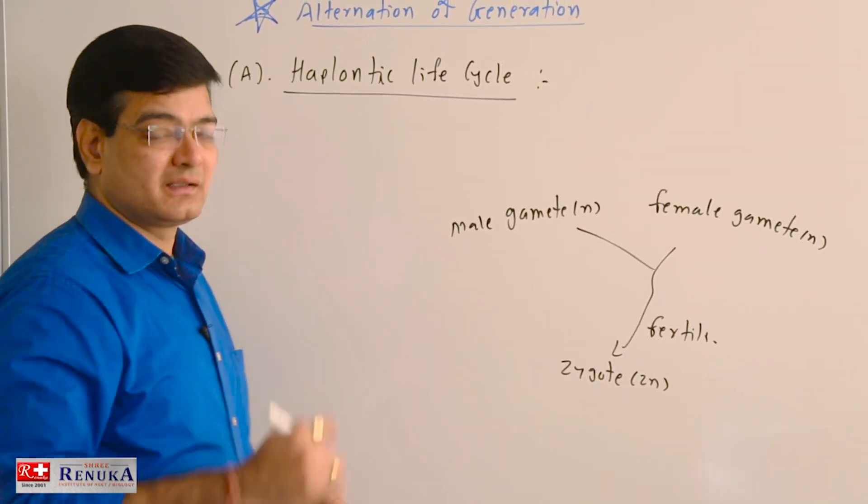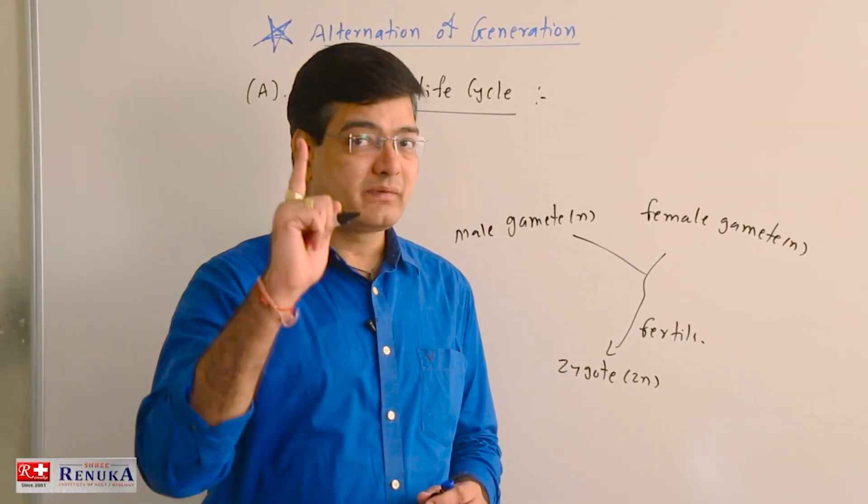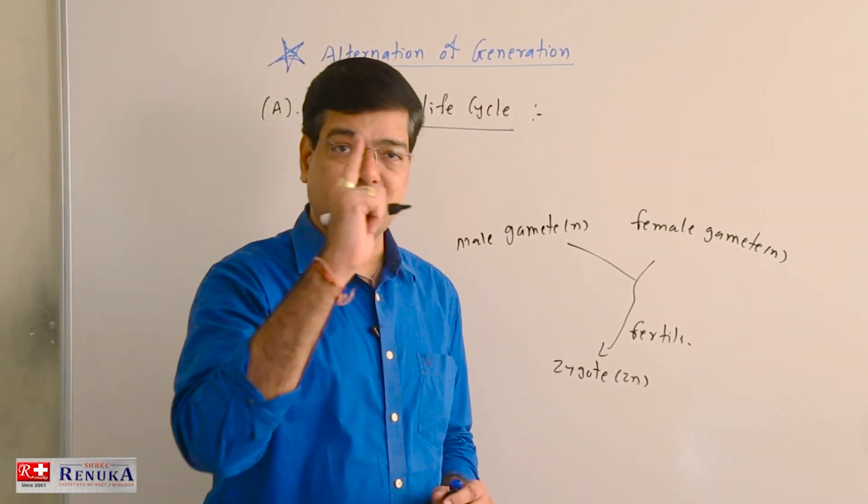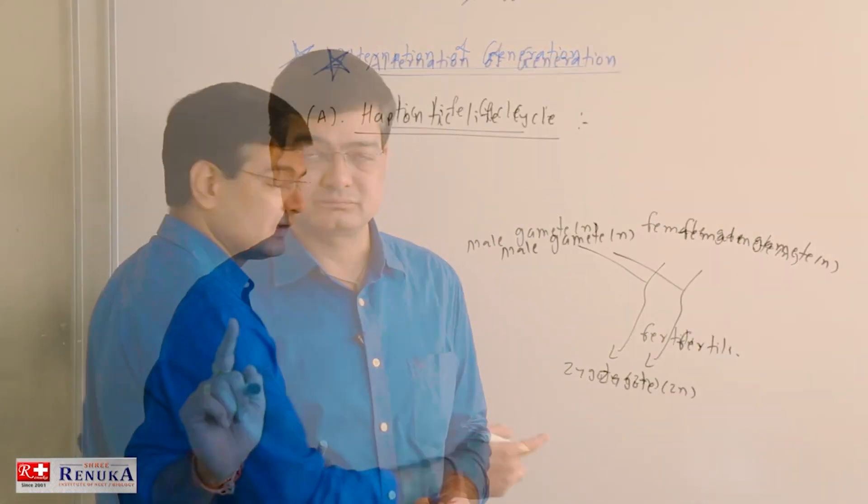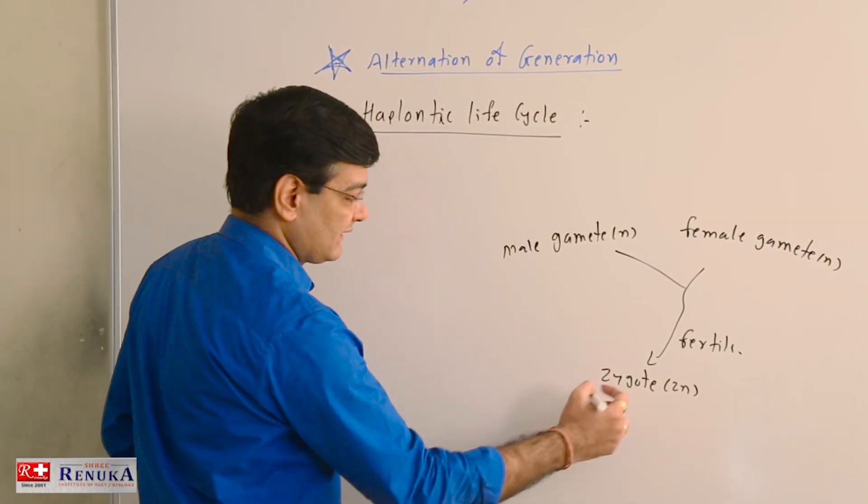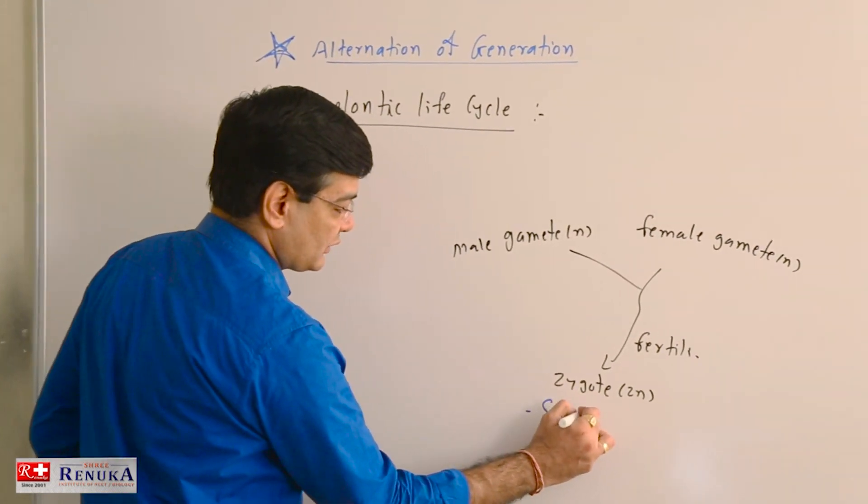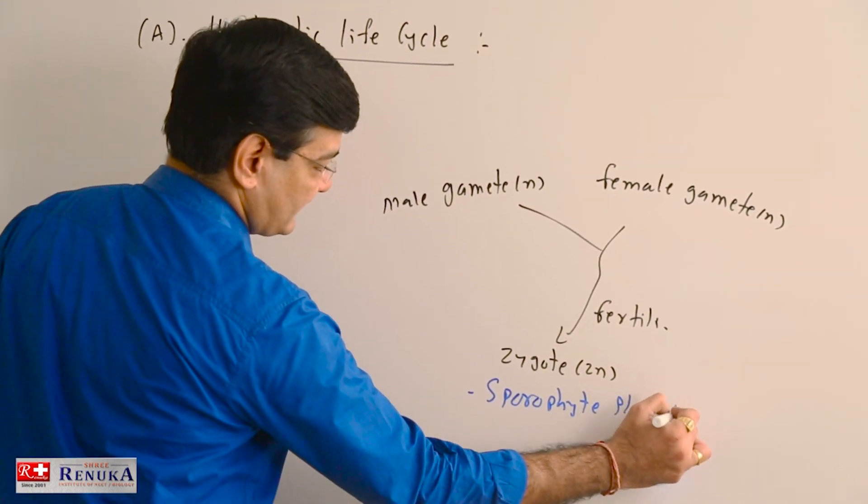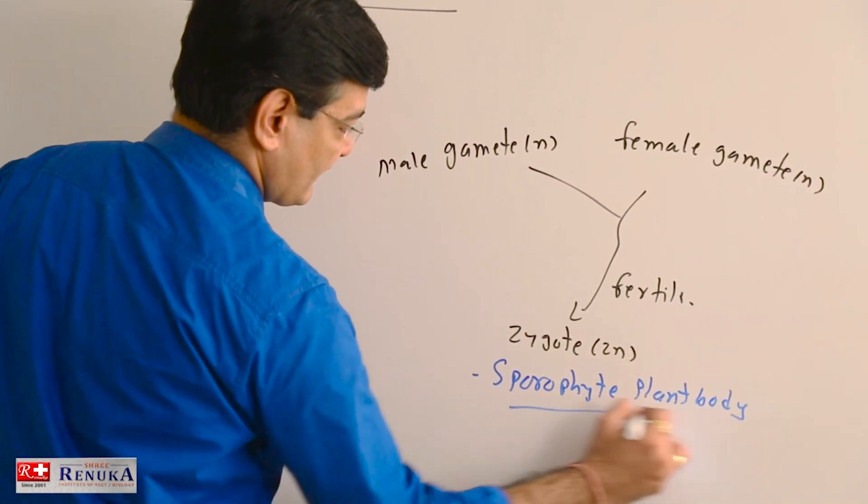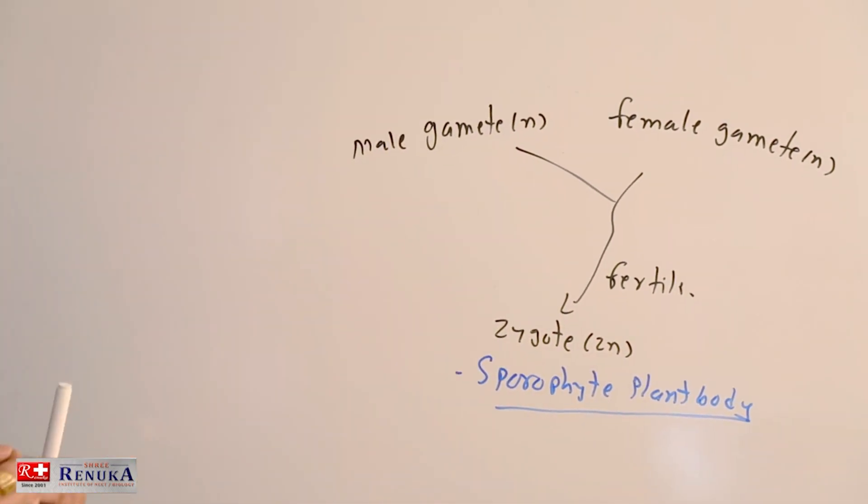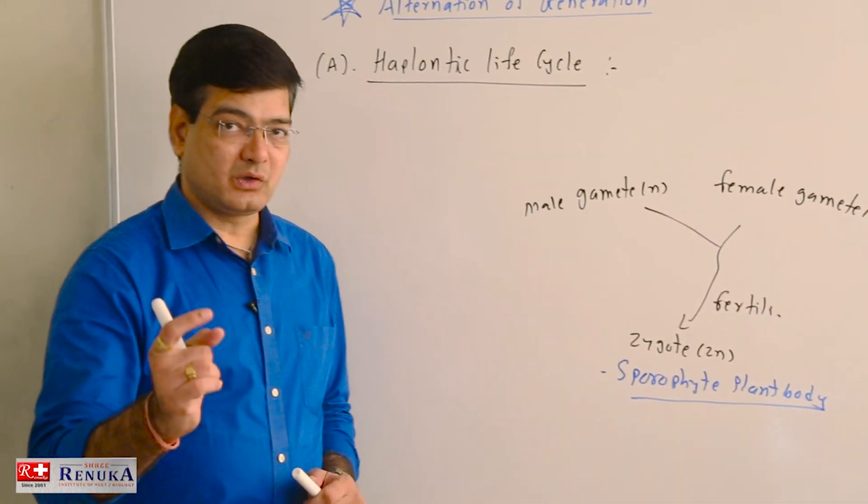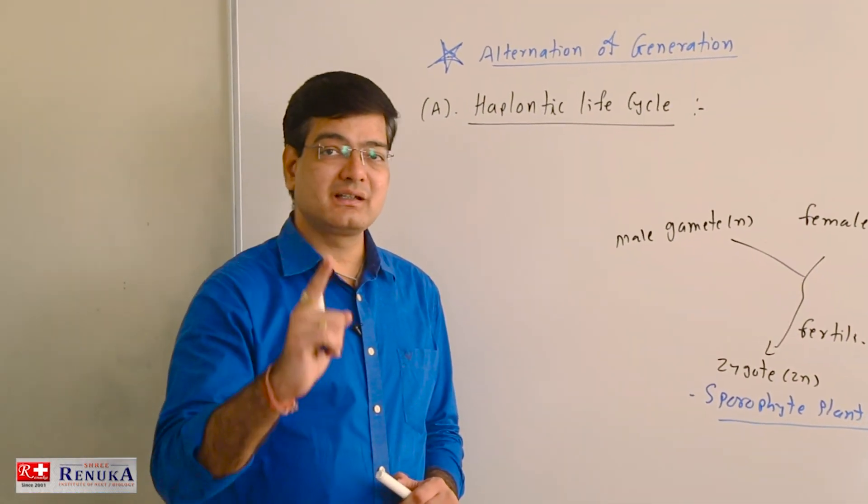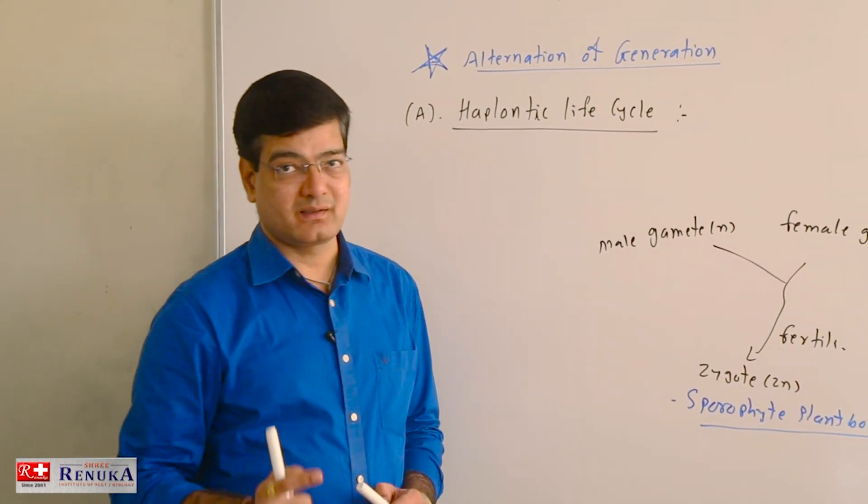Remember that zygote is considered as the first cell of sporophytic plant body always. The zygote in the case of algae is considered as sporophyte plant body, and this is a diploid case. The sporophytic plant body in the case of algae is a single cell structure, and that is zygote itself.